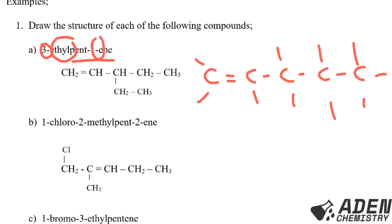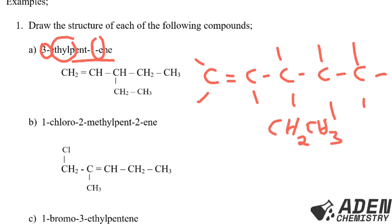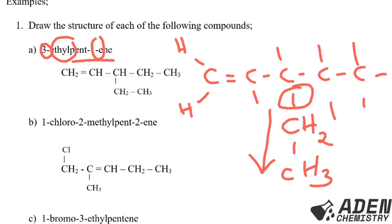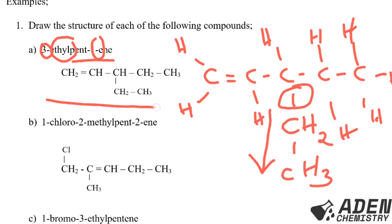So how do you write ethyl? You can write ethyl as C2H5, or you can write it as CH2CH3. Alternatively, you can put CH2, then another bond, then write CH3. There is only one attachment here, because only one hydrogen has been replaced by an alkyl group, which is the ethyl group. So you put the remaining hydrogens on each carbon. So I have drawn it in structural formula — you can draw it in structural formula or condensed structural formula.